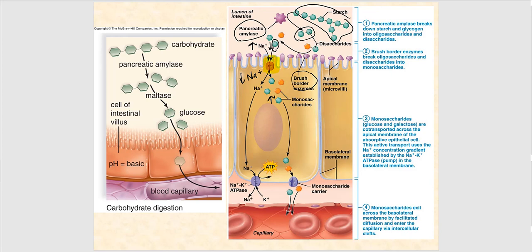It's called a symporter because we're going to move sodium from out to in, following its concentration gradient, and that will allow the movement of the monosaccharide glucose against its concentration gradient. They're moving in the same direction — both going inside the cell — this is why this is symport. Now that we have all these monosaccharides inside the cell, it cannot remain inside. The whole idea is to absorb this glucose. What comes next is facilitated diffusion — a monosaccharide carrier transmembrane protein.